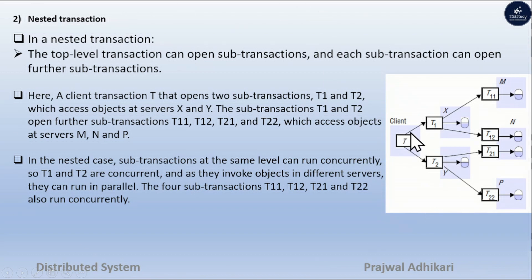A client transaction T that opens two sub-transactions, T1 and T2, which access objects at servers X and Y. The sub-transactions T1 and T2 open further sub-transactions T11, T12, T21, and T22, which access objects at servers M, N, and P.